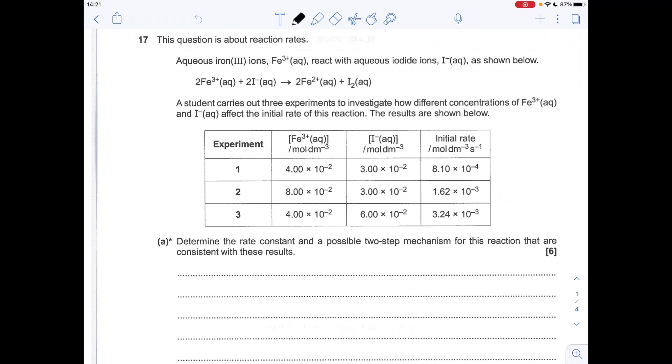Okay, so to work out the rate constant first, we've got to work out the orders of reaction for the two reactants. So what we can do here, it's quite nice, is we can keep both constant for different experiments and calculate the effect that the other one's changing concentration is having on the rate.